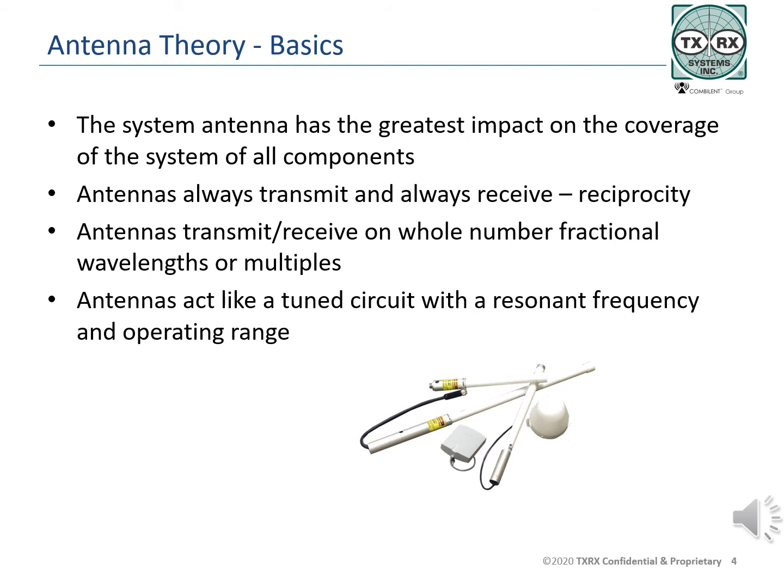Antennas do not need to be the full wavelength of the frequency of operation. If a full-wave antenna were used for the low end of the radio frequency spectrum at 10 kHz, it would be nearly 18 miles long. Full-wave antennas cut for 890 MHz would be 0.34 meters long, or just over a foot. Many systems use one-half or one-quarter wavelength antennas, making an 890 MHz antenna about 6 inches long for half-wave and 3 inches long for quarter-wave.